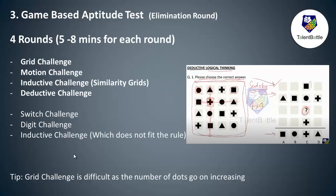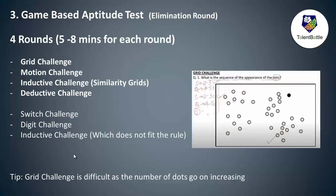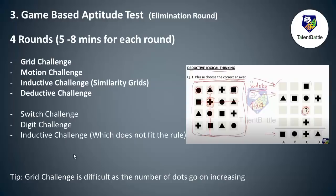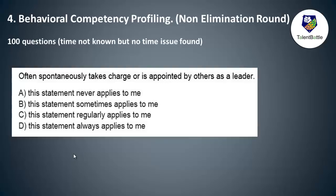One important tip: the grid challenge gets progressively harder as the number of dots increases — starting from one or two dots, then three, four, five, and so on. The overall game-based round can take around 20 to 25 minutes.